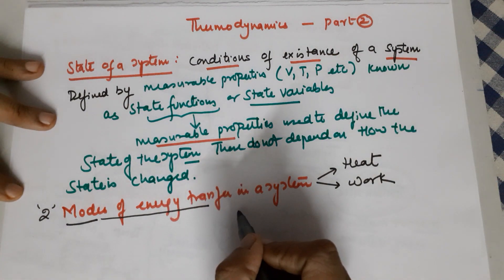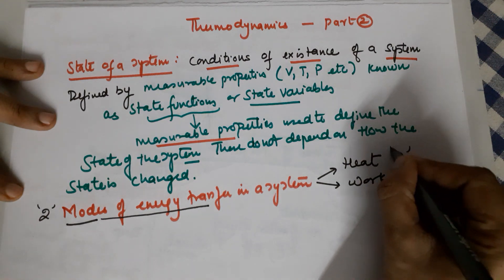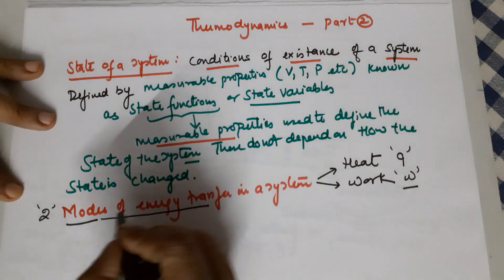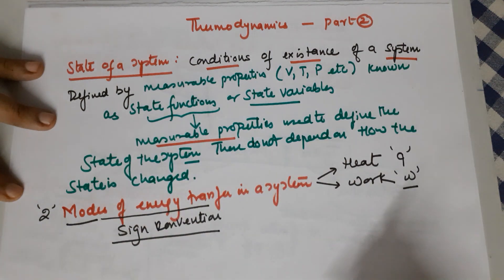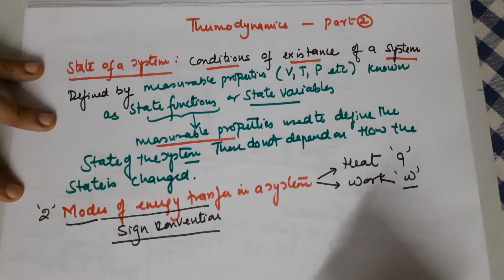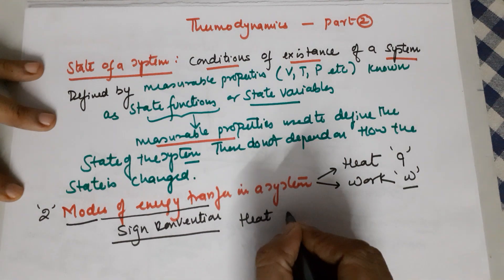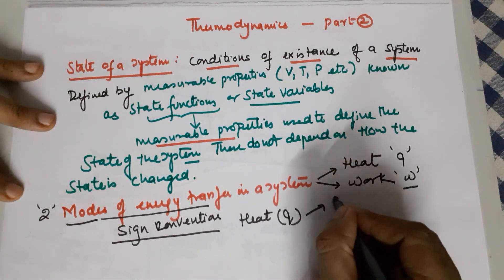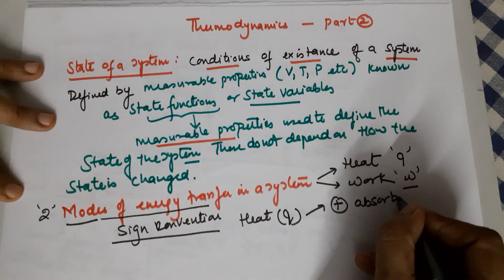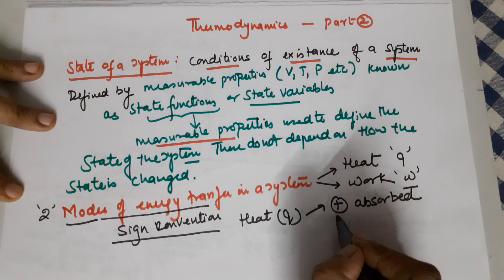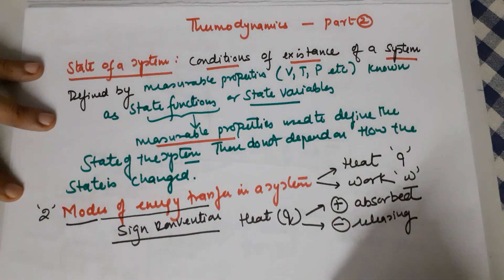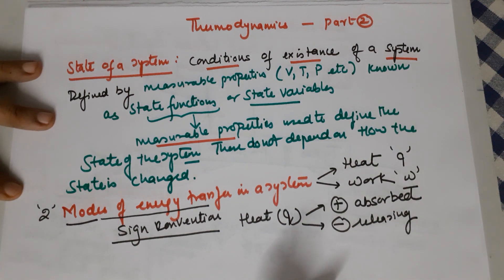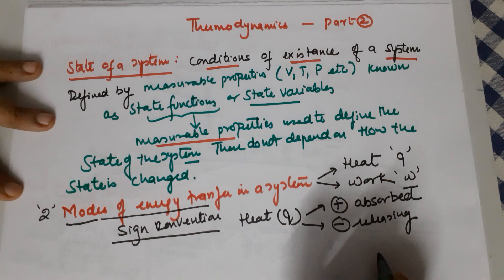Q is the term used for heat and W is used for work. There is a sign convention followed in thermodynamics specifically for heat and work done. For heat (q): the value is positive if the system is absorbing heat, and negative if the system is releasing heat. For example, if the system has lost 100 kilojoules, then q is minus 100 kilojoules.